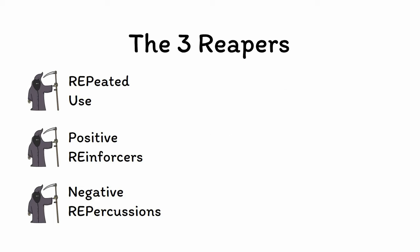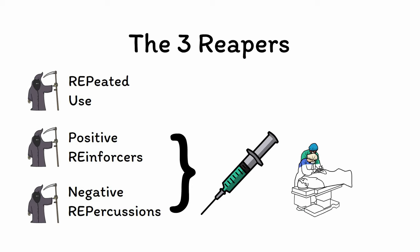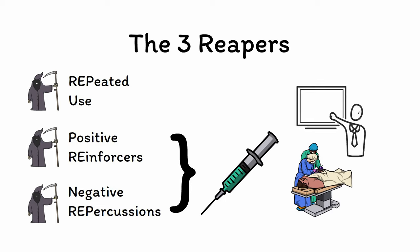Use of positive reinforcers with negative repercussions but without repeated use is slightly more problematic, as even a one-time exposure to specific substances can cause damage. However, if it's not repeated, then by definition it cannot be an addiction. For example, someone who tries heroin once could potentially end up in the hospital if they overdose, but if they learn from the experience and never use heroin again, it would not make sense to call this an addiction.